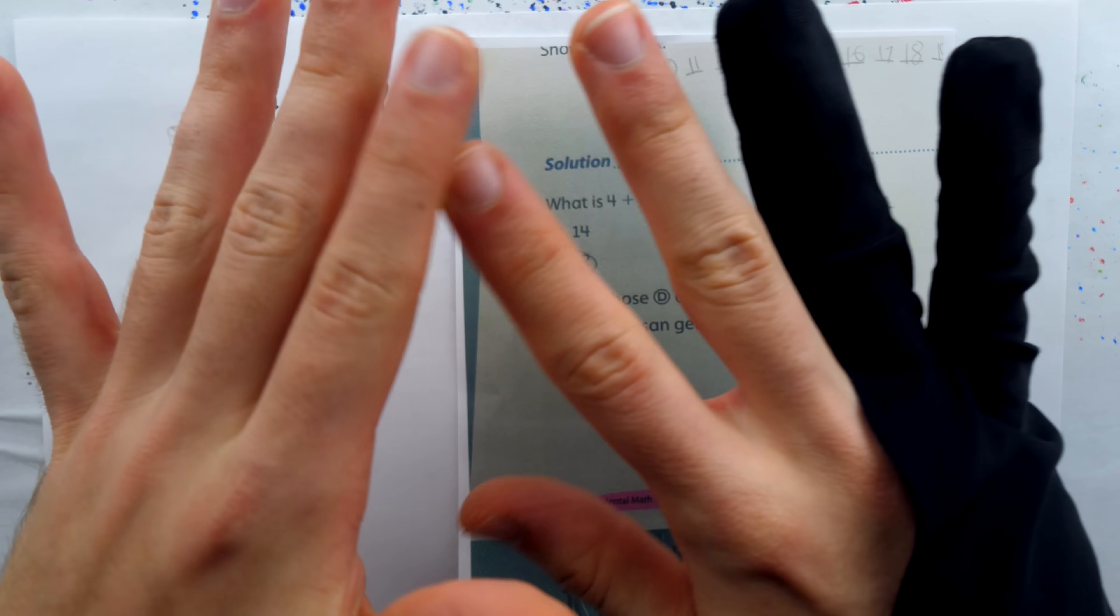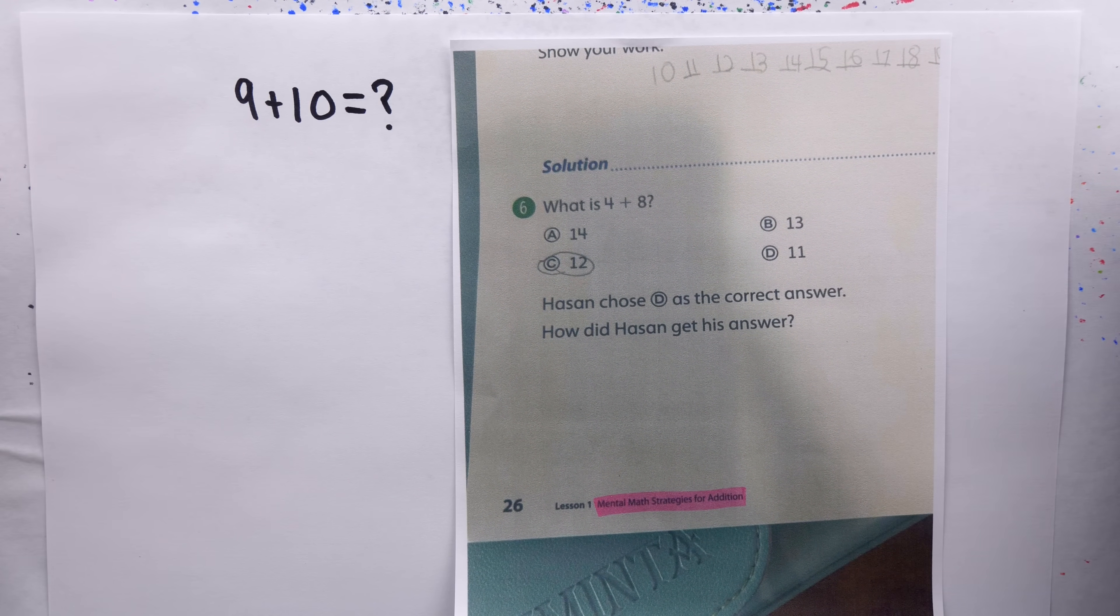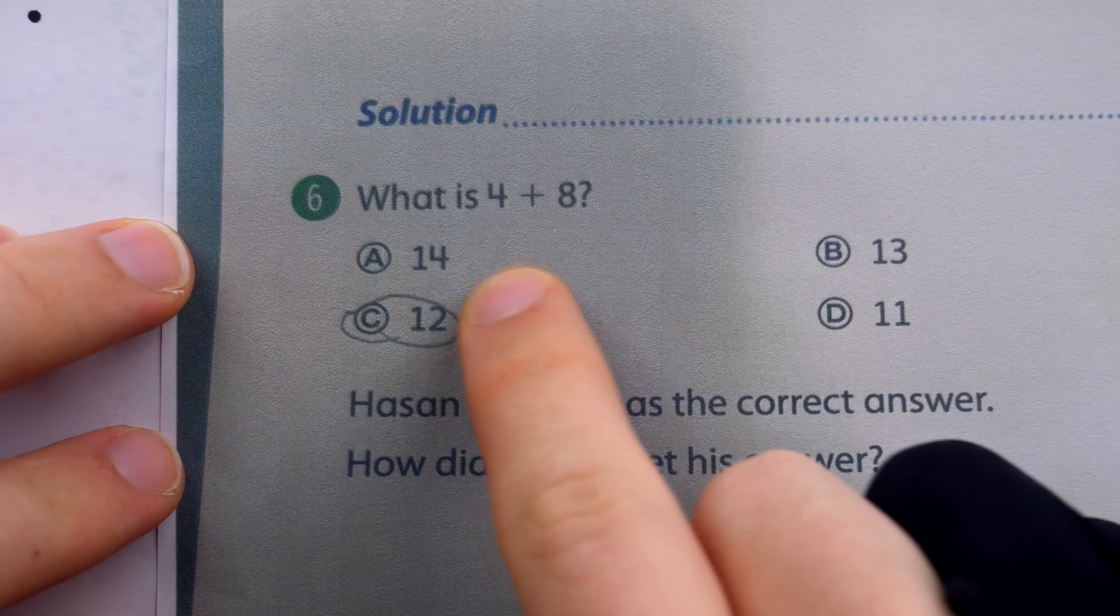16, 17, 18, 19, 10 fingers. So I've added 10 to 9. There's my answer. With a strategy that simple, how could Hassan have screwed up 4 plus 8?